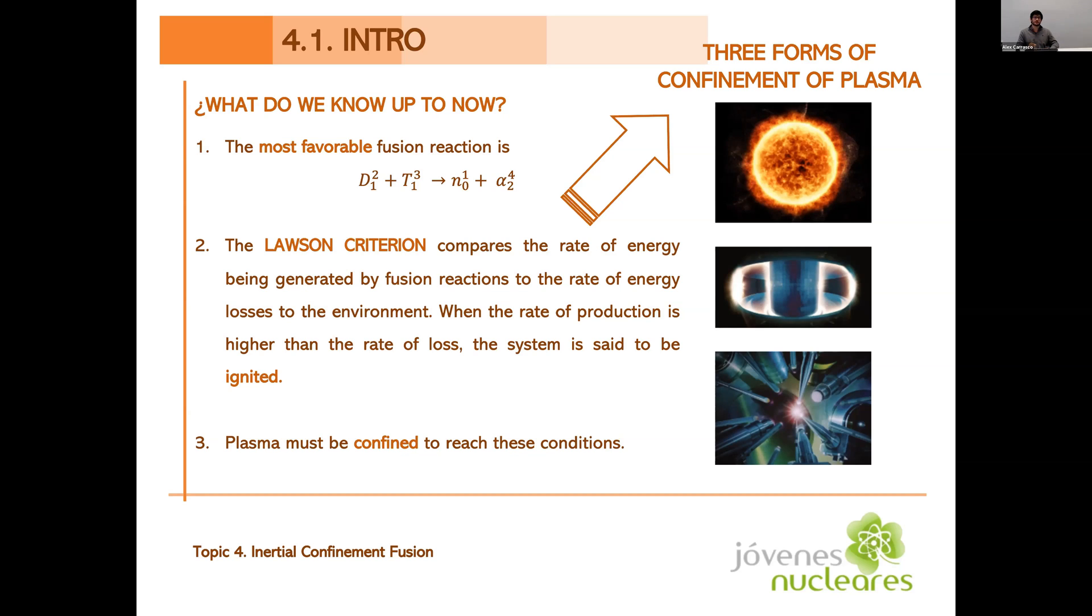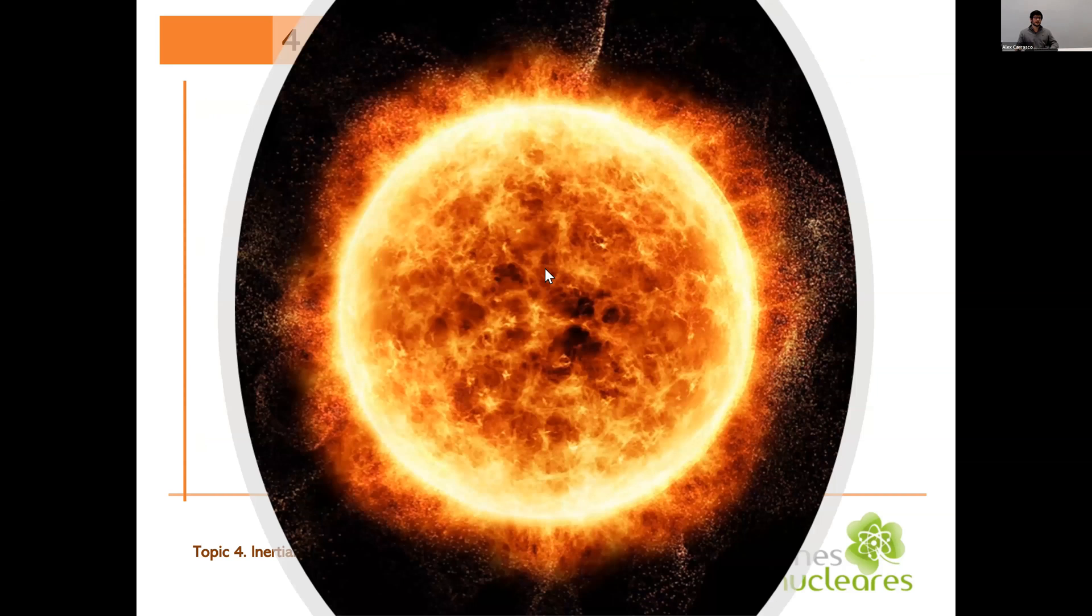The first way, and don't be scared, is gravitational confinement. This is the one that happens in the sun, so in the sun, the light that we have outside happens because the force of the sun, of the sun's gravity, confines the particles and produces fusion, creating this light energy.